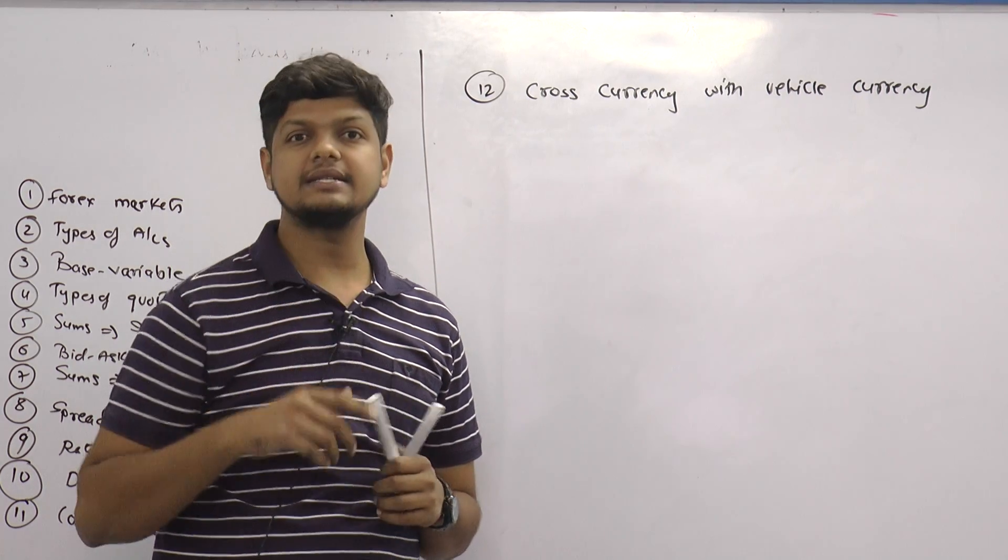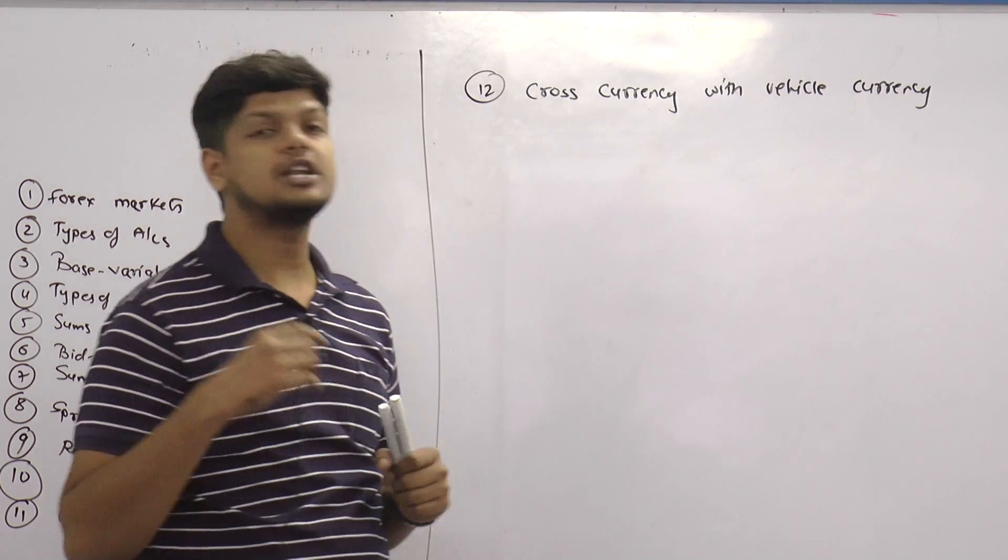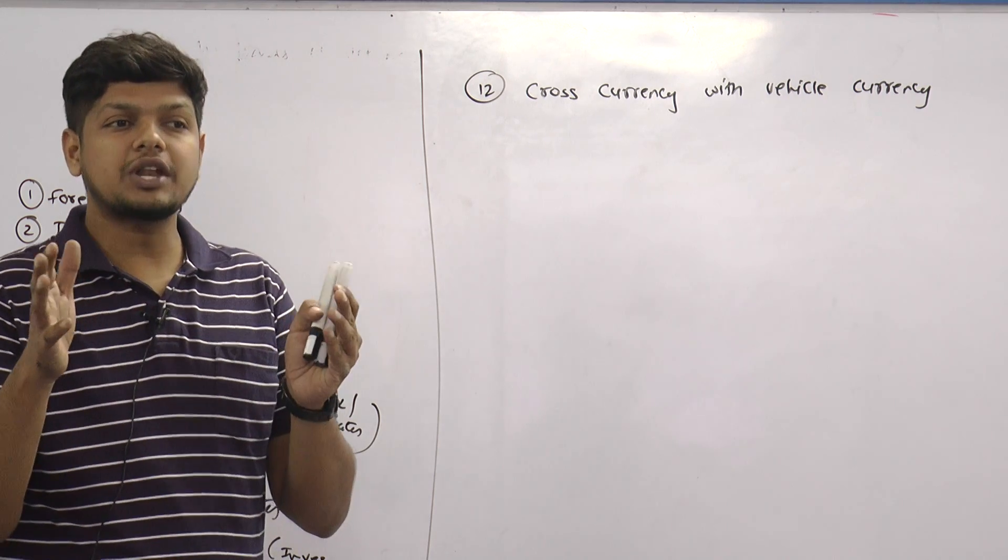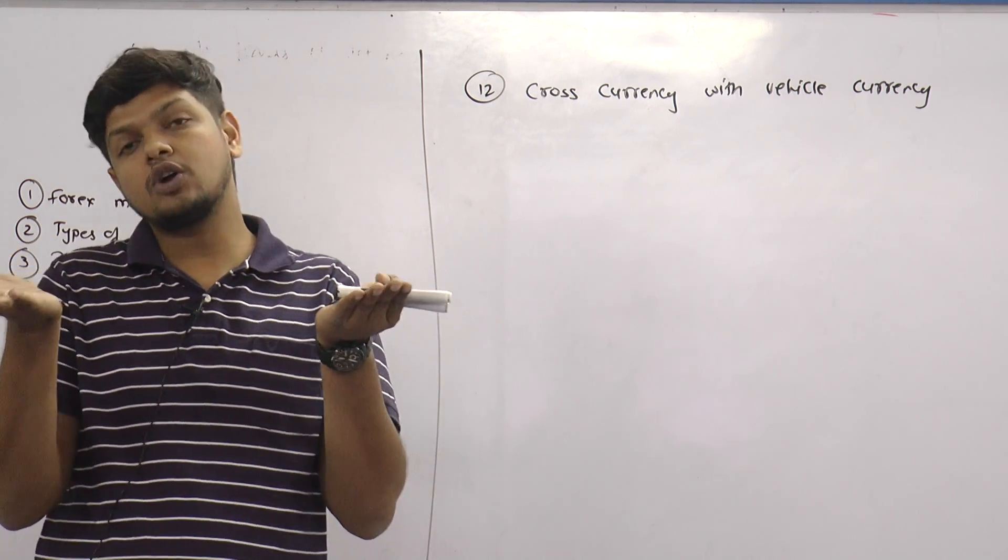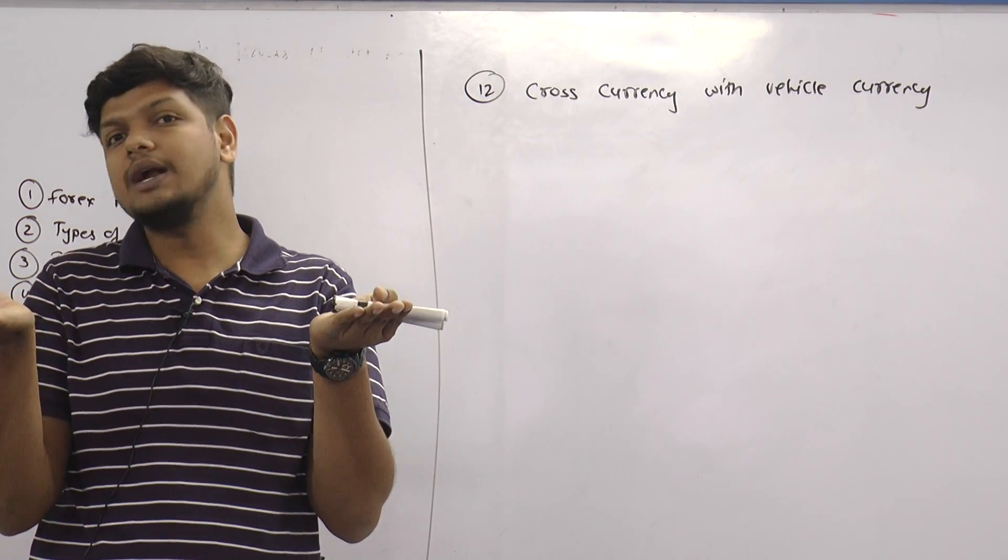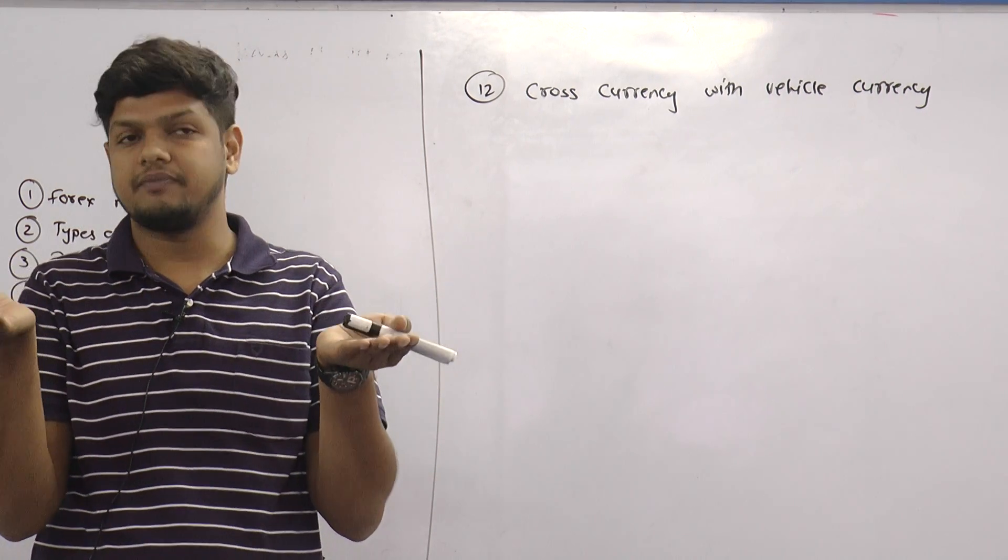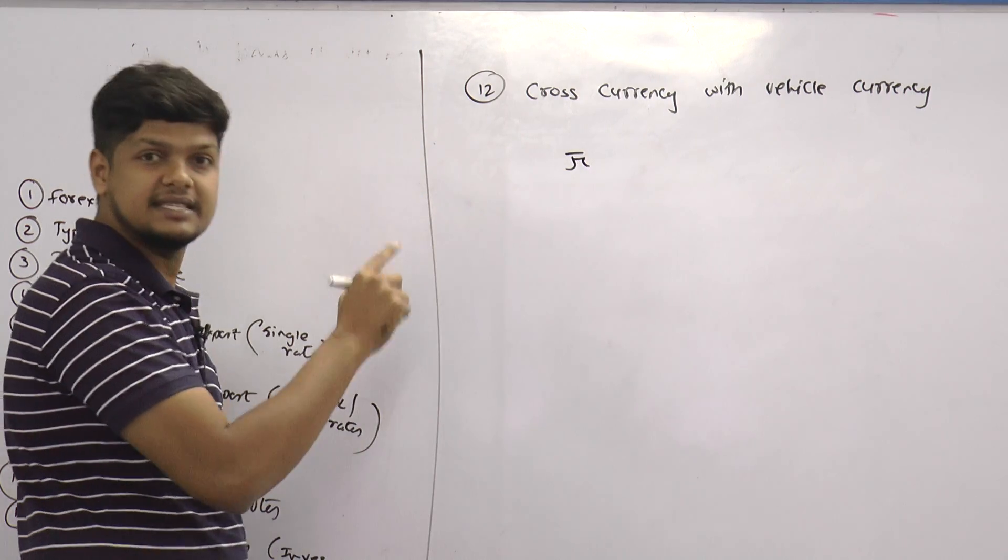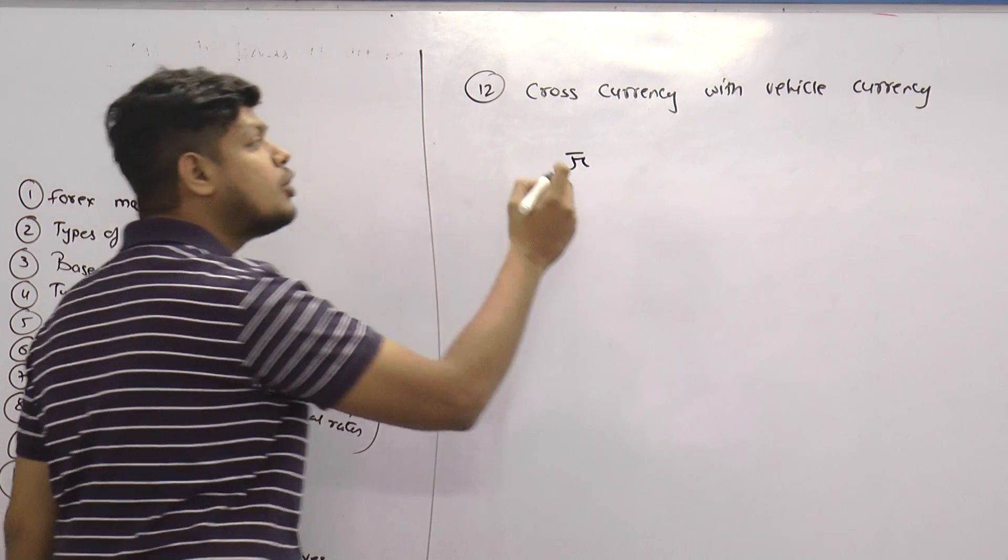Now let us understand this. First, what happens in a cross currency. In a cross currency, when you want to trade between two countries or two currencies, there is not a direct quote available between them. So what happens if I want to trade between Yuan, the Chinese currency, and Rupee?